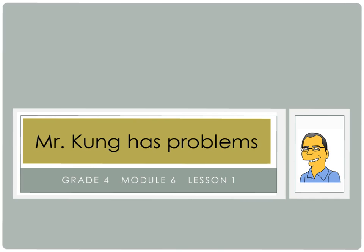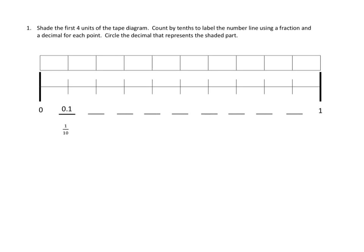Let's take a look at the first one. Let's see if we can read together part of number one. Number one, shade the first four units of the tape diagram. Well, let's just do that first. Shade the first four units of the tape diagram. Okay, well there's our whole. I'm going to just shade them, the first four units of my tape diagram.